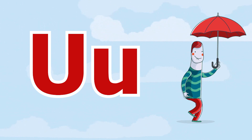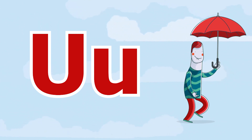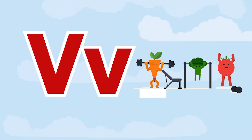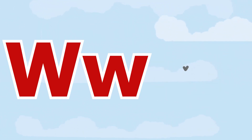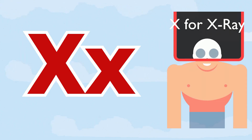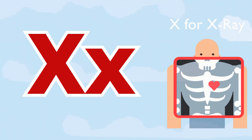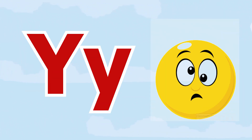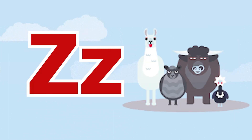T for tree, U for umbrella, V for vegetable, W for watch, X for x-ray, Y for yellow, Z for zoo.